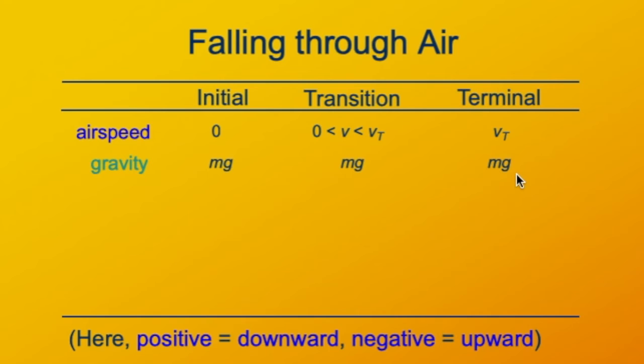The force of drag, which opposes gravity, initially is zero because there's no airspeed. As time goes on, as the object picks up speed, the force of drag increases. And then when it reaches terminal velocity, the force of drag is exactly opposite the force of gravity.